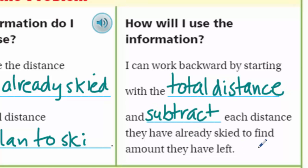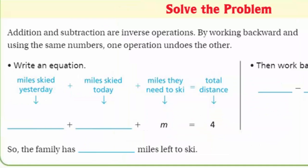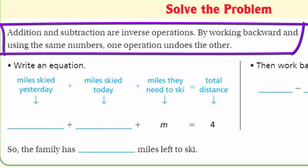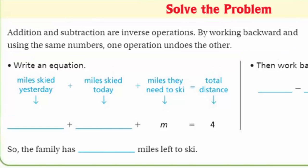How will I use the information? Well, we talked about that whole backward. I can work backward by starting with the total distance. That's our four miles. And then I'm going to have to subtract at some point here each distance they have already skied to find out how much they have left. Is this like easy peasy, lemon squeezy? Yeah, I think so. Now we have solved the problem. Addition and subtraction are inverse operations. See, by working backward and using the same numbers, one operation undoes the other. And that's important to know.